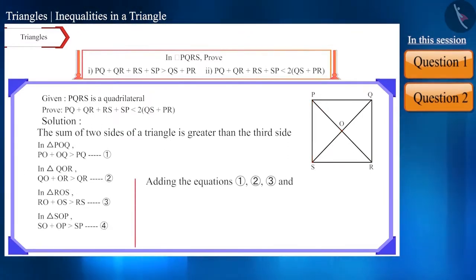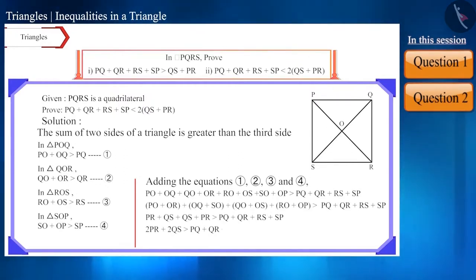Now, if we add all four inequalities, then we get... By simplifying it, we will get... If you write it this way, it will be something like PQ plus QR plus RS plus SP is smaller than 2 PR plus QS. And thus, it has also been proved.